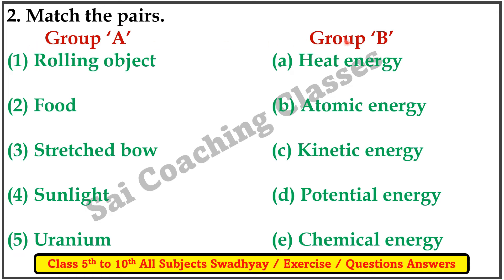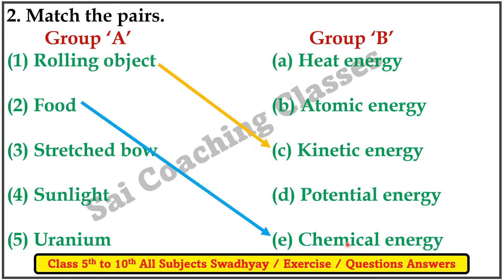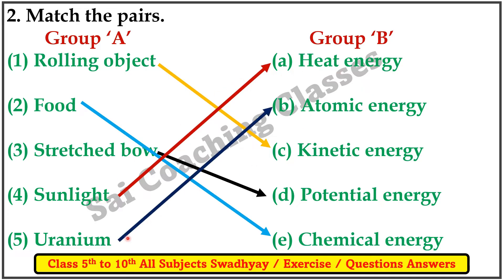Group A and Group B — let us match the pairs. A moving object has kinetic energy. Food is chemical energy. A stretched object has potential energy. Sunlight is heat energy. Uranium is atomic energy.